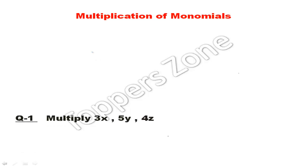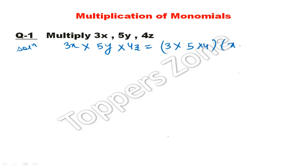Start with the first question. Multiply 3x, 5y, 4z. The solution is 3x into 5y into 4z. First, multiply the coefficients: 3 into 5 into 4. That's 15, and 15 times 4 is 60. Then multiply the variables x, y, z. So the answer is 60xyz.